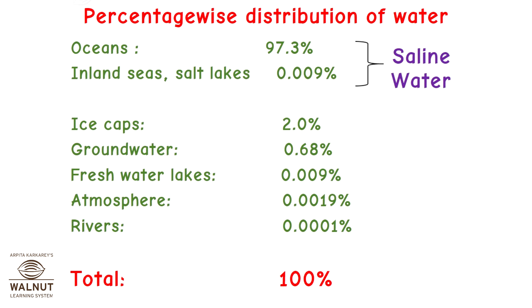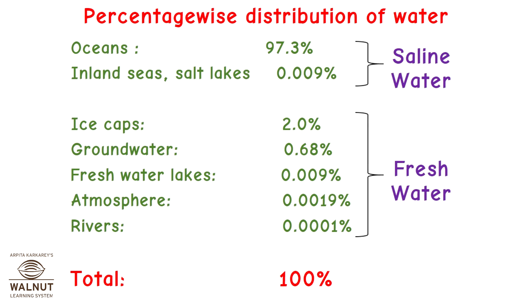Out of that, oceans and inland seas as well as salt lakes form saline water. Whereas ice caps, groundwater, freshwater lakes, atmosphere, and rivers form the fresh water.